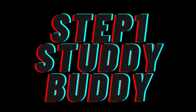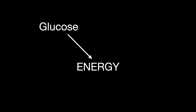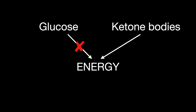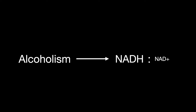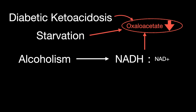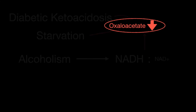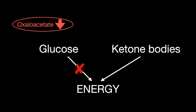Welcome to the Step 1 of You Study Guide. In this lesson, we learn about ketone bodies. Ketone bodies are used as a source of energy when glucose is not available. Things that cause ketone body production are alcoholism, which causes a high NADH-to-NAD+ ratio and results in oxaloacetate being shunted to malate. Starvation and diabetic ketoacidosis also decrease the levels of oxaloacetate, which means energy must come in the form of ketone bodies.